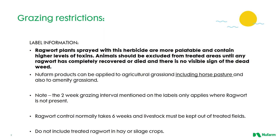Some of the grazing restrictions we must adhere to when controlling ragwort: ragwort plants sprayed with herbicide are more palatable and contain higher levels of toxins. Animals should be excluded from treated areas until any ragwort has completely recovered or died and there is no visible sign of the dead weed. After herbicide application, as the ragwort plant becomes senescent it becomes more palatable to animals, so you need to be careful that all the material has disappeared before allowing livestock back into the field to graze.